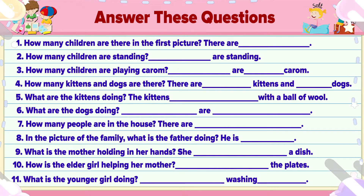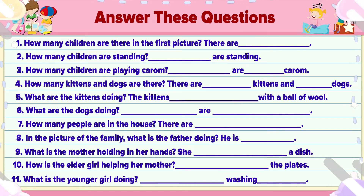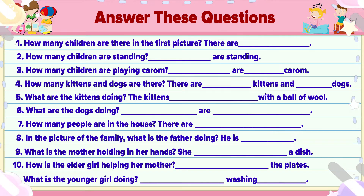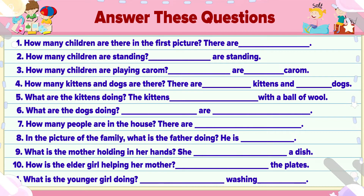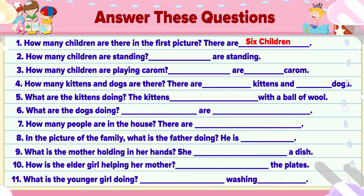Now answer these questions. How many children are there in the first picture? Counting: one, two, three, four, five, six. There are six children in the first picture.